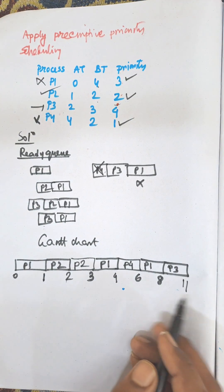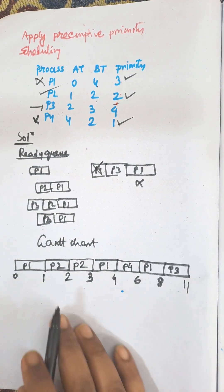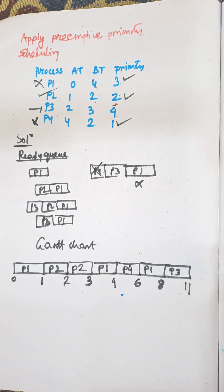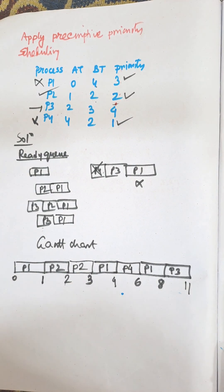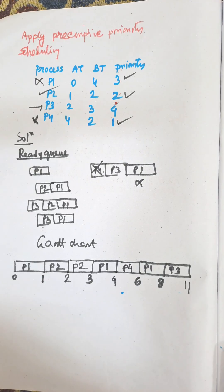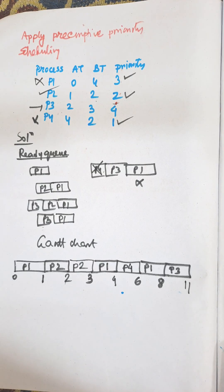So this is the Gantt chart for preemptive priority scheduling. Preemptive priority scheduling is based on priority numbers. First of all, we need to load the processes according to arrival time. Then the CPU will select the process whose priority number is less than the others in the ready queue. This is the concept of preemptive priority scheduling.